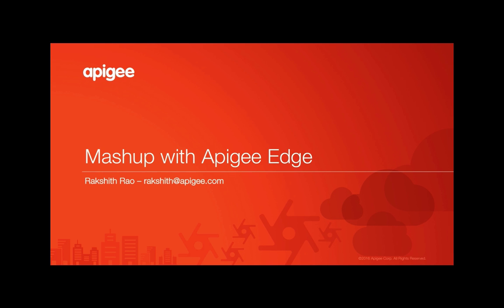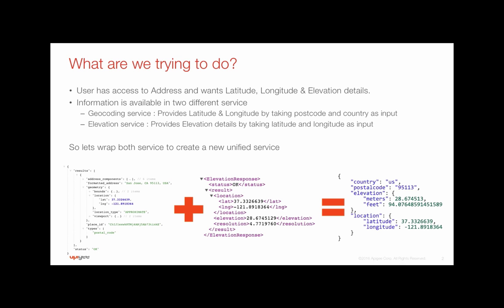Let's take a look at how we can mash up the responses from two different services using Apigee Edge. The user has access to an address and would want latitude, longitude, and elevation details. This information is available as part of two different services which the user has to manually invoke and finally comprehend the response. So instead of the user having to go through this hassle, let's create a new service by wrapping them up and getting the user the desired response in the format they need.